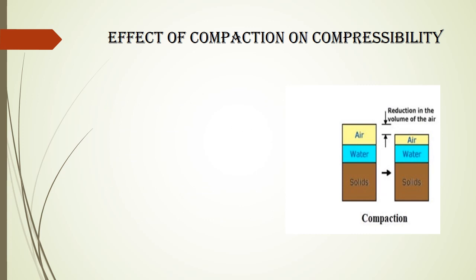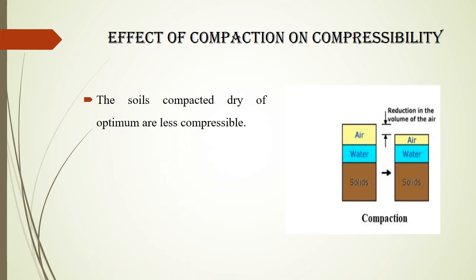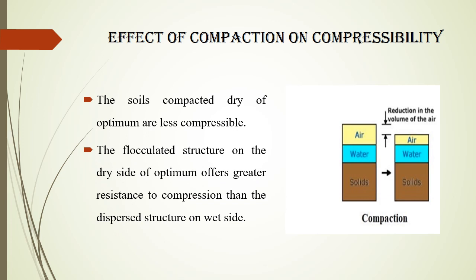Next is the effect of compaction on compressibility of soil. As a result of compaction there is a reduction in the volume of air and soil gets densified. The soils compacted dry of optimum are less compressible. The flocculated structure on the dry side of optimum offers greater resistance to compression than the dispersed structure on the wet side.